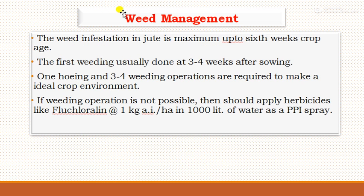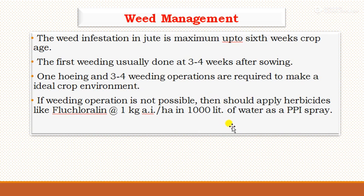For weed management, weed infestation in jute is maximum up to six weeks of crop age. The first weeding should be done at 3 to 4 weeks after sowing, and three to four weeding operations are required to maintain an ideal crop environment. If manual weeding is not possible, apply the herbicide fluchloralin at the rate of 1 kg active ingredient per hectare in 1000 litres of water as a pre-plant incorporation spray.